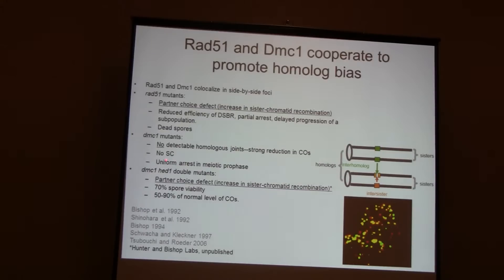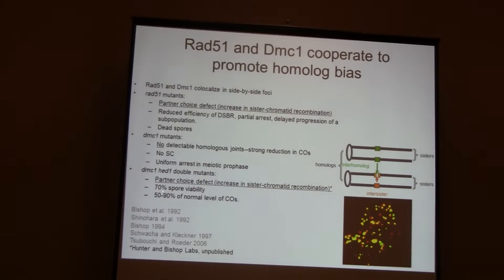In a DMC1 mutant you have an absolute block to recombination — no repair of double strand breaks and very uniform meiotic arrest. But if you now take away Hed1, you have a partner choice defect, yet very high spore viability and up to almost normal levels of crossing over.